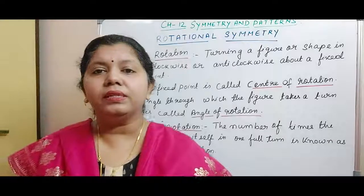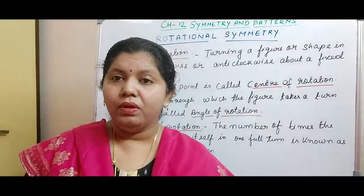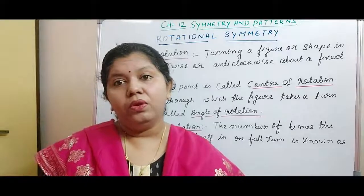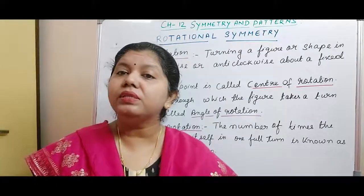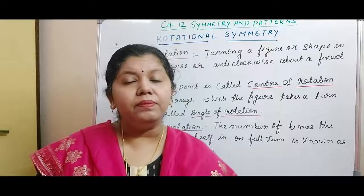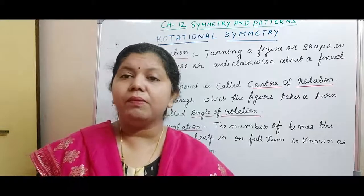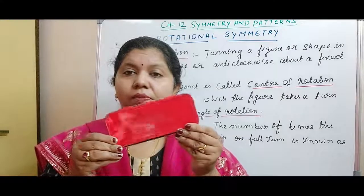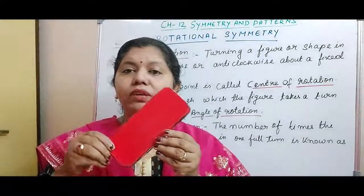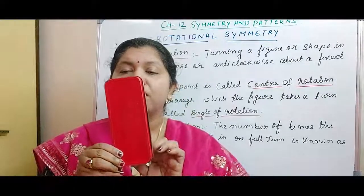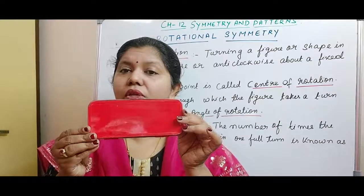Now we come to the next thing, that is order of rotation. What do you call as order of rotation? Every figure or any shape when completing a full turn — full turn means a 360 degree complete angle — how many times does the figure come to its original form? Suppose I kept my box in this way and I rotated it by 90 degrees. The original form was like this but now the form has changed. Once again I rotated it by 90 degrees and now it has come to its original form.